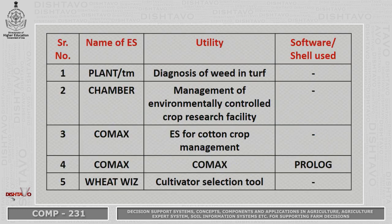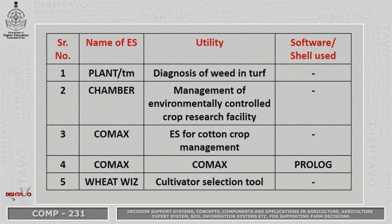Let us understand the different expert systems prevailing in agriculture. The expert system Plant, also known as TM, is utilized for diagnosis of weed in turf. Another expert system, CHAMBER, is utilized for management of an environmentally controlled crop research facility. Another expert system is COMEX, used for cotton crop entire crop management. COMEX is also utilized for maize and cotton crops and is associated with the software Prolog.